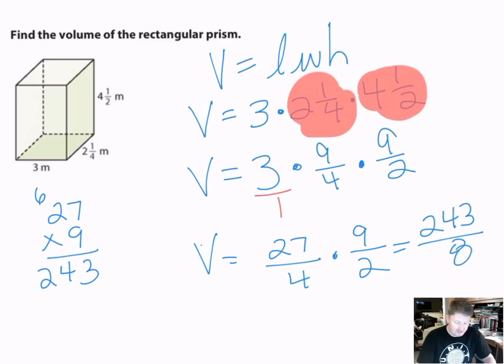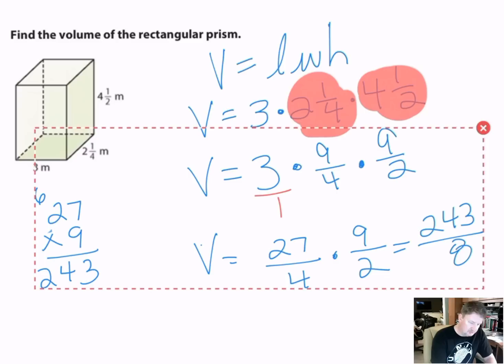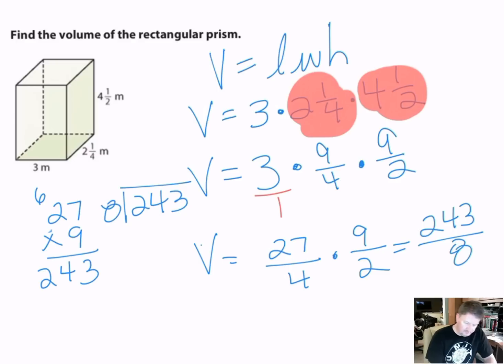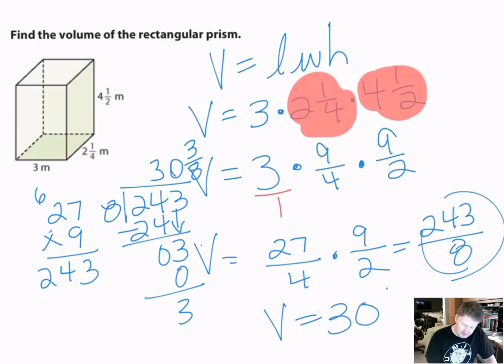So now, I just need to simplify it. I need to divide 243 by 8. So, 8 will go into 24, 3 times. 3 times 8 is 24. I subtract. I get a 0. I bring the 3 down. 8 will not go into 3. So, I have a 3 remainder. So, my volume equals 30 and 3 eighths. Since that's meters and we have three dimensions in this, it's meters cubed. Let's go to the next example.